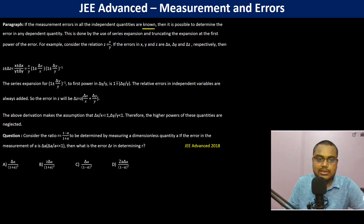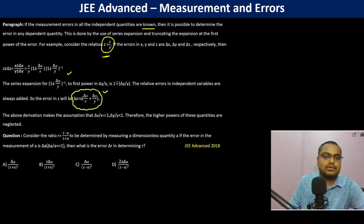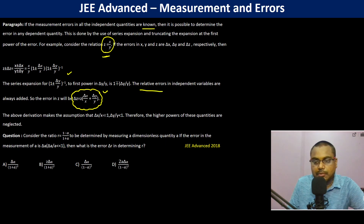For example, consider the relation J equals X by Y. If the errors are respectively known, the relative errors of the independent variables are always added.